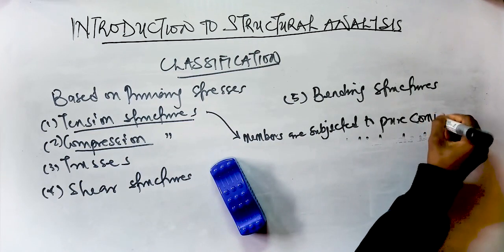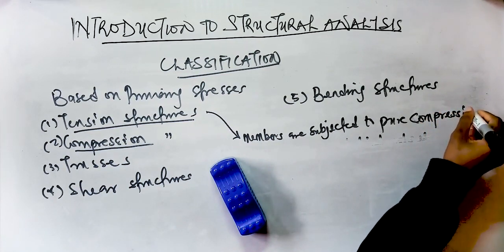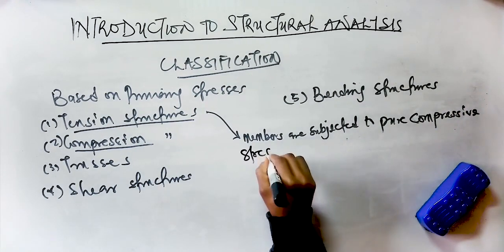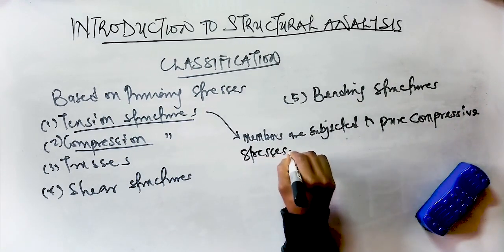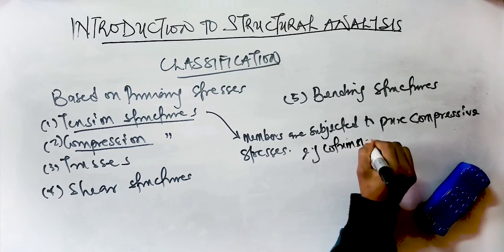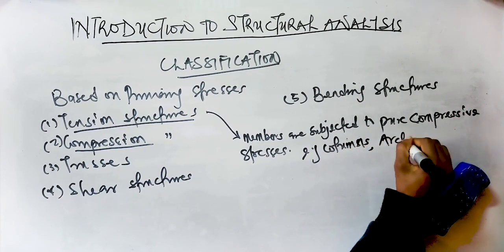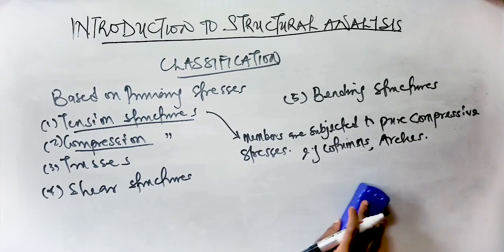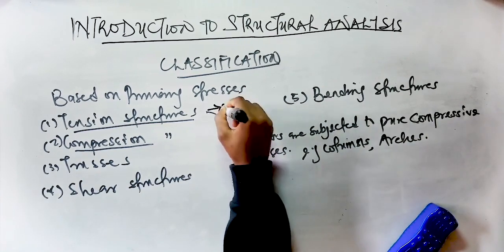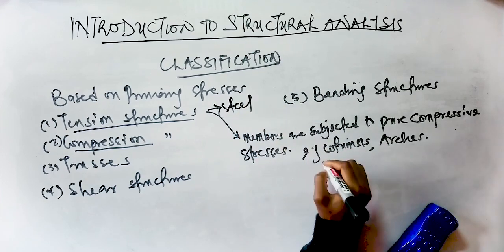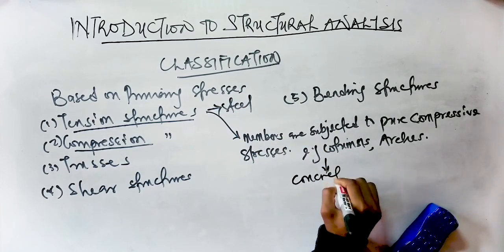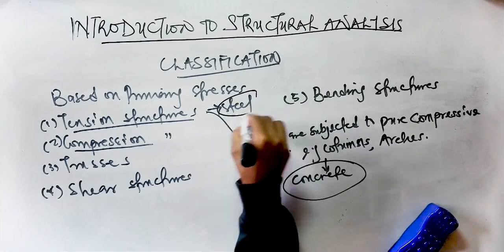Compression structures also develop compressive stresses under the action of external loads. Common examples of compression structures are columns and arches. Columns are straight members subjected to axially compressive loads. Tension structures usually deal with steel, while compression structures usually deal with concrete.